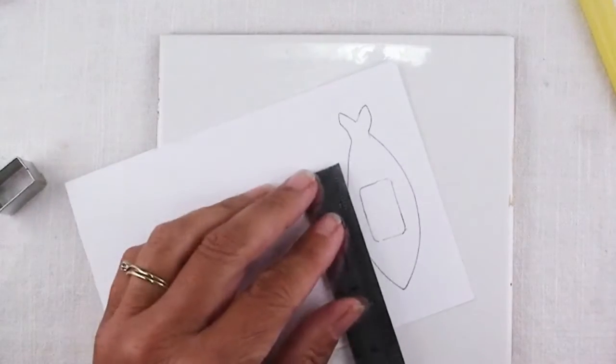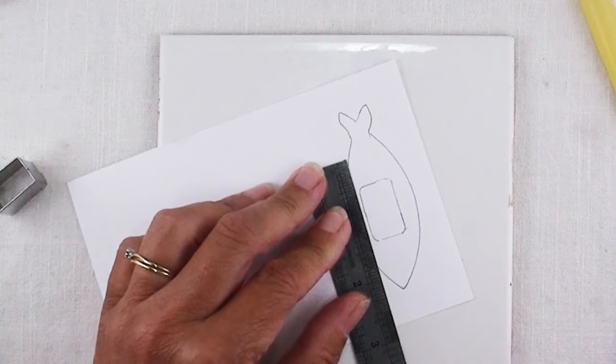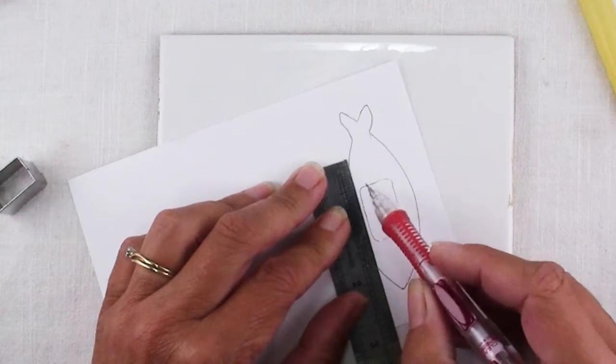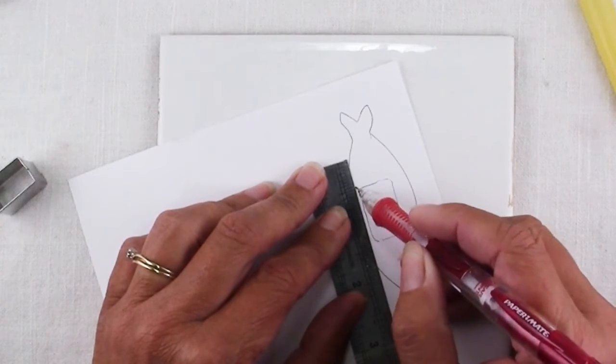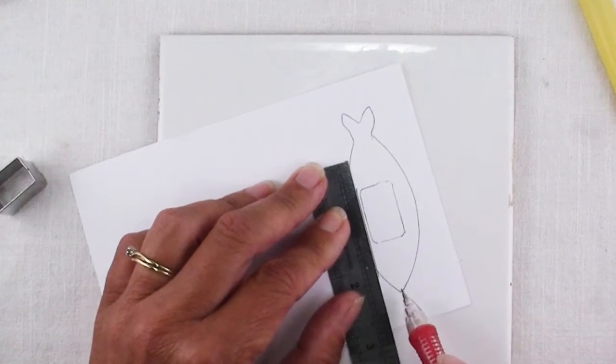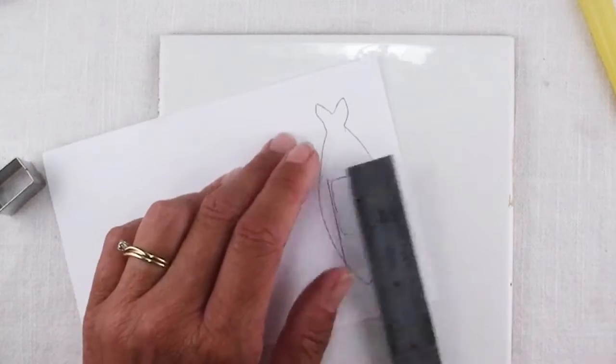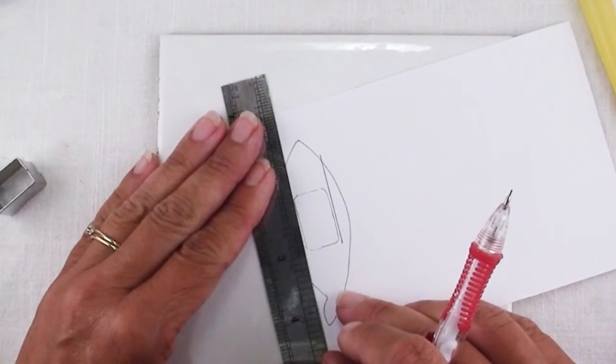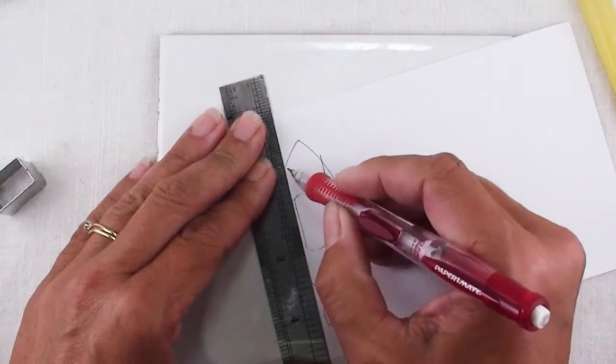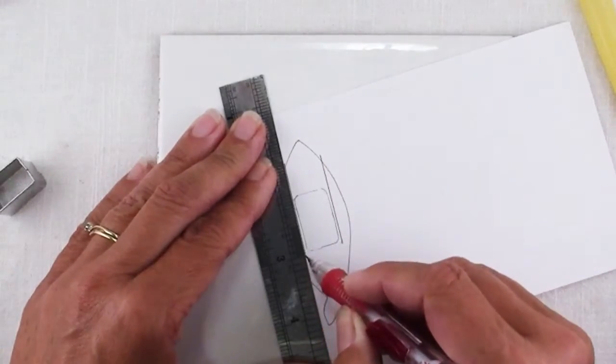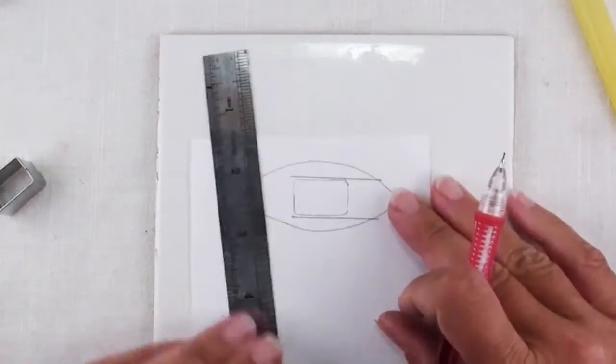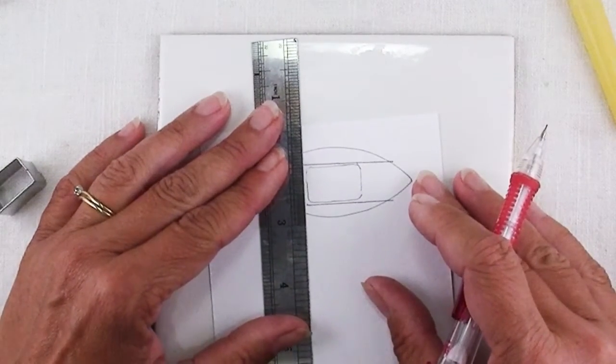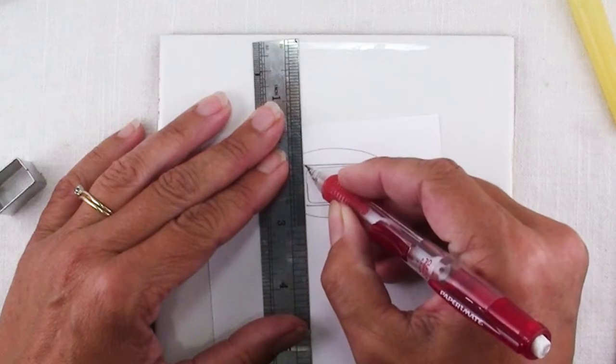So I'm going to position that where I want it on the fish and trace around it. Next I'm going to take a ruler and draw a line just a smidge outside of that cutter line all the way to the head of the fish. Do that on both sides of your rectangle shape. And also draw a line on the side furthest from the fish's head, about the same distance away from the cutter line.